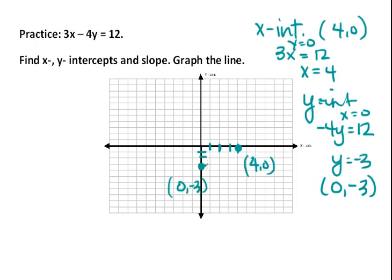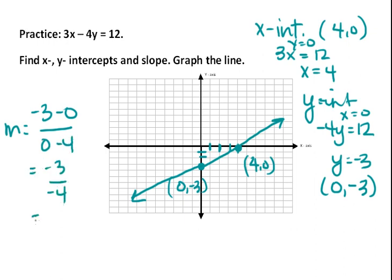You can draw the line connecting the two. This is our line. Now find the slope. Minus 3 minus 0 over 0 minus 4 gives us minus 3 over minus 4, which ends up being 3 over 4.